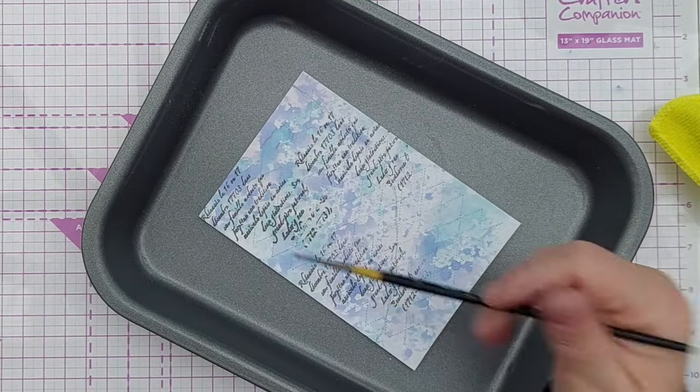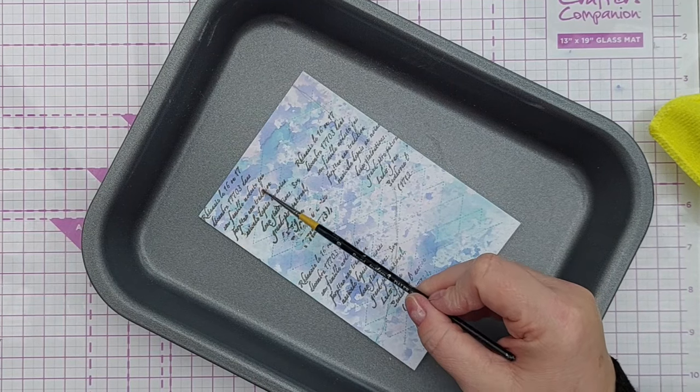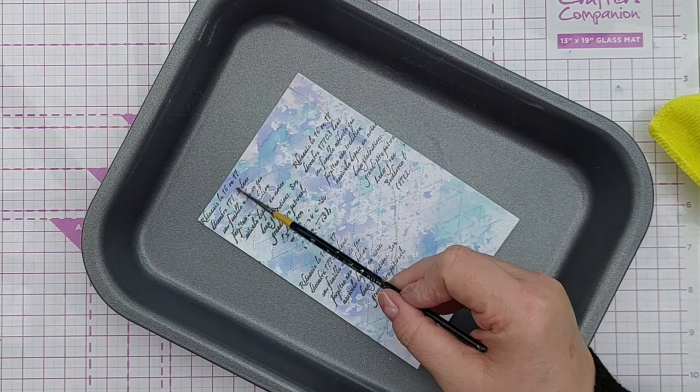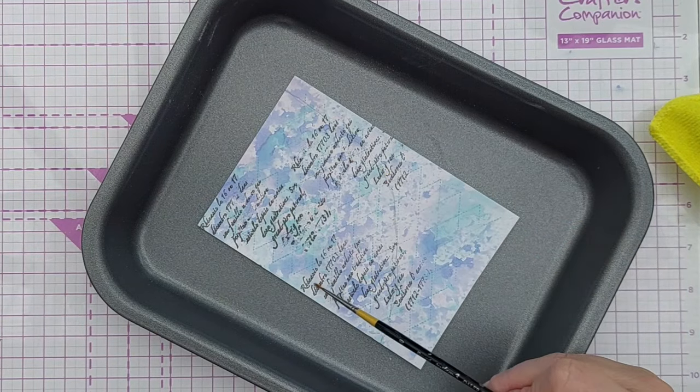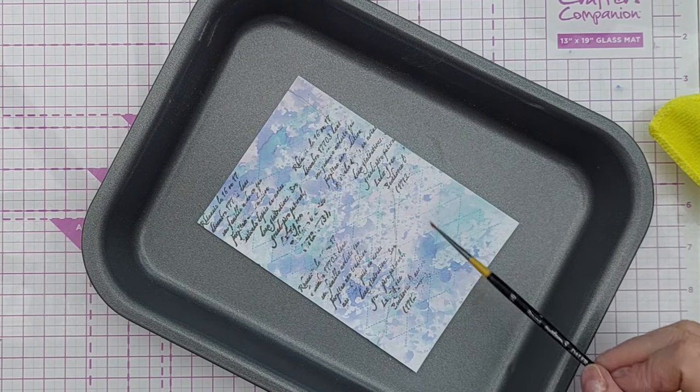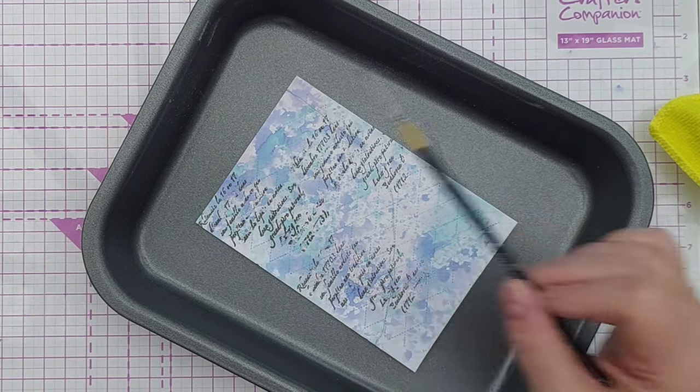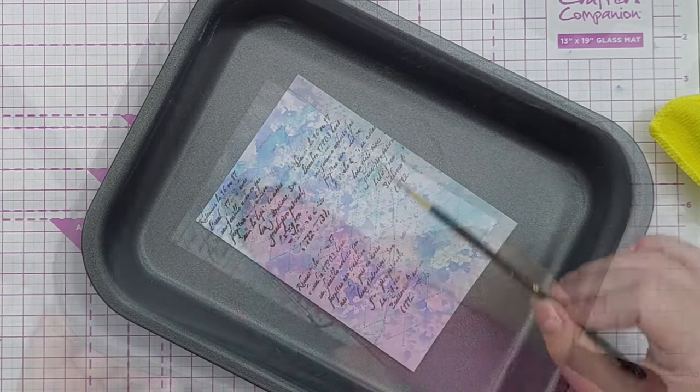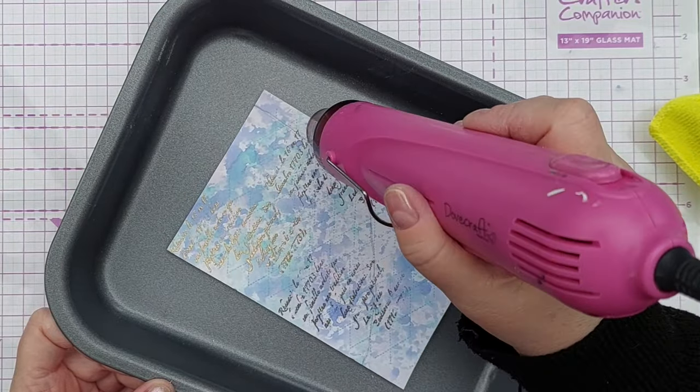But before I heated it, I took a tiny little paintbrush and just distressed the text a bit. I didn't want it too perfect. I wanted it to look part of the background, not just stamped on top of the background. So, you know, when you do heat embossing, you don't have to have perfect images. You can deliberately distress your stamped image and this is just one way of doing it.